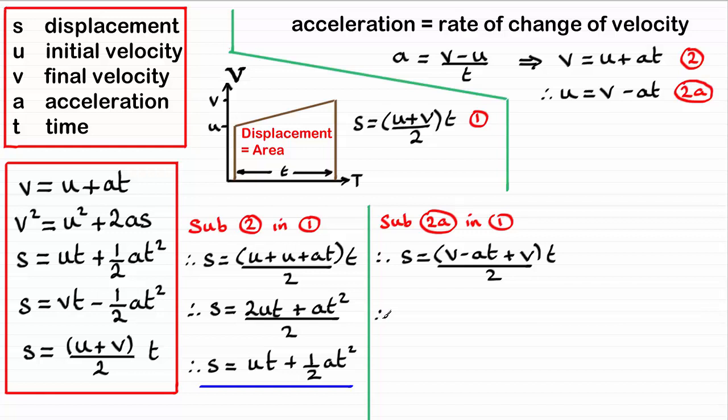And again, if you expand the bracket out, and group the v's together, you've got 2v times the t, so you've got 2vt. You've also got minus at squared. And that's all divided by 2. And just as we did before, divide each of the two terms here by 2.